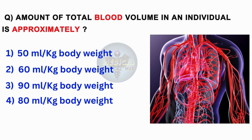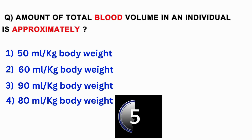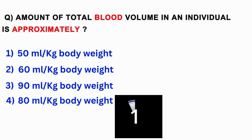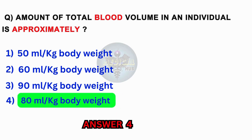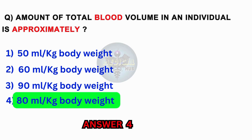The amount of total blood volume in an individual is approximately: 50 mL per kg body weight, 60 mL per kg body weight, 90 mL per kg body weight, 80 mL per kg body weight. Answer 4: 80 mL per kg body weight.